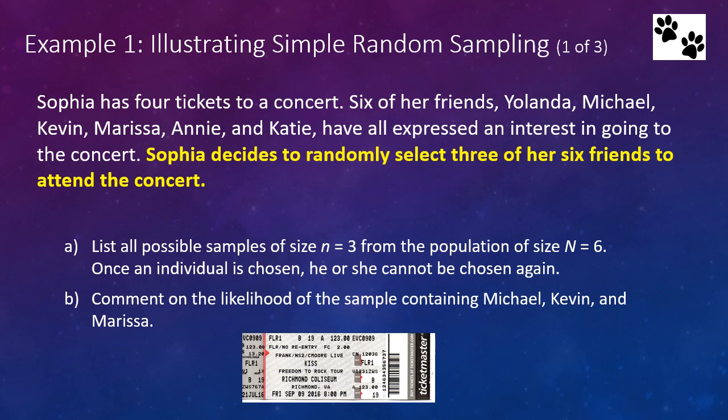So let's look at an example about to do this. This is Example 1 from your text. Sophia has four tickets to a concert. Six of her friends—Yolanda, Michael, Kevin, Marissa, Annie, and Katie—have all expressed an interest in going to the concert. Sophia decides to randomly select three of her six friends to attend the concert. Part A: List all possible samples of size n equals 3 from the population of size N equals 6. Once an individual is chosen, he or she cannot be chosen again. Part B: Comment on the likelihood of the sample containing Michael, Kevin, and Marissa.